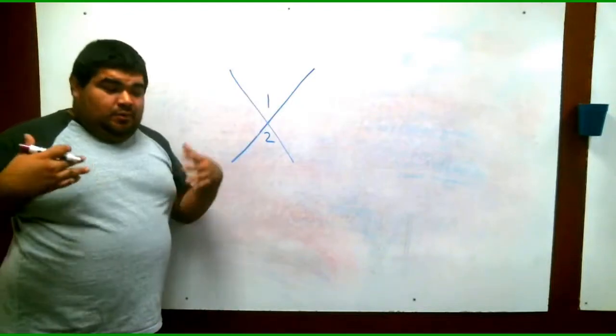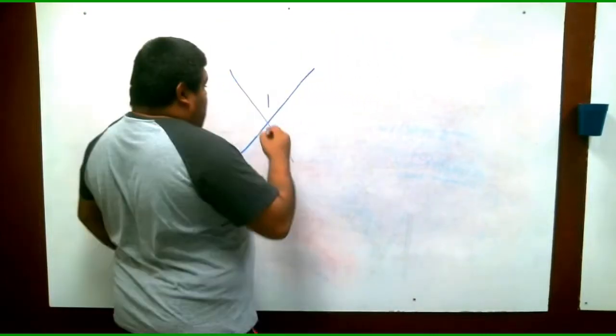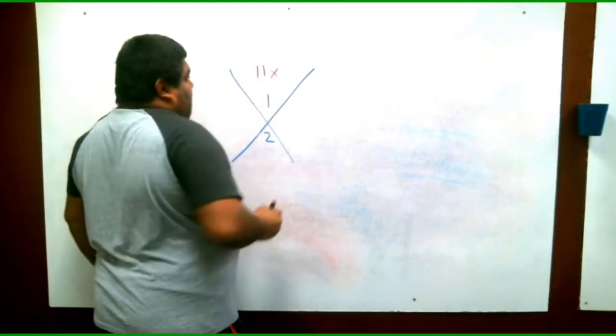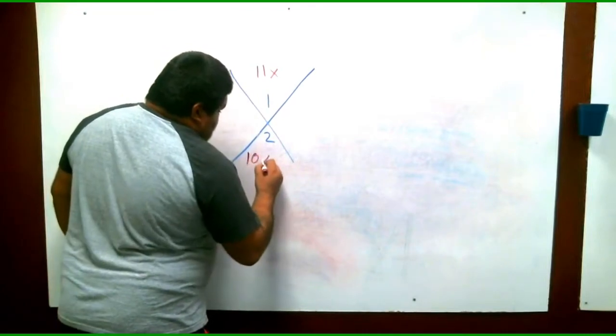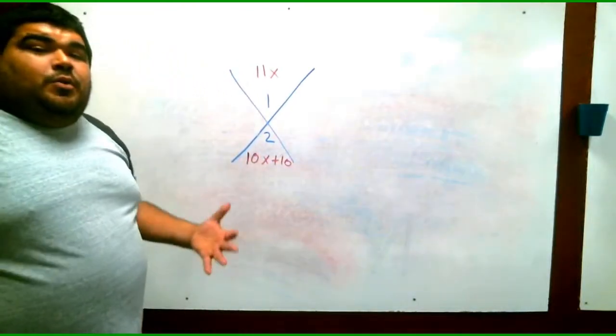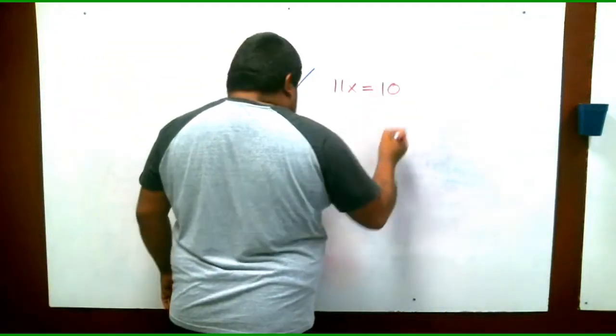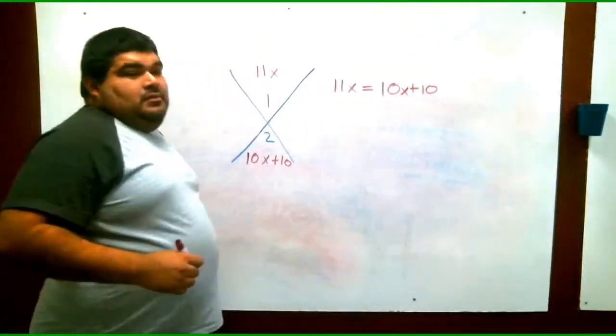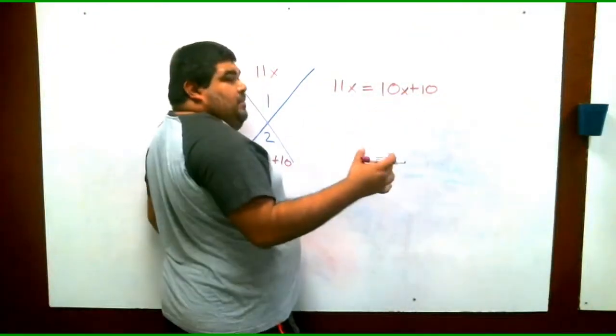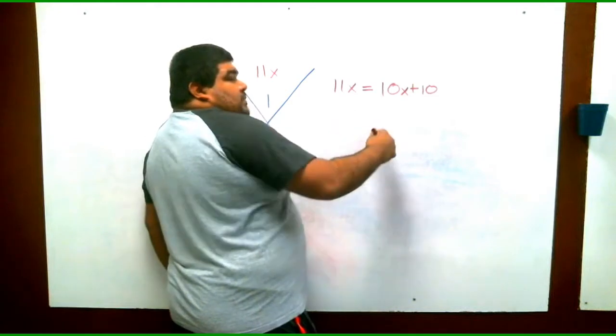All right, guys. So for the final one is a little different. For this one, remember, the rule is to equal each other. So what we're going to do is it tells us that angle 1 equals 11x. Angle 2 equals 10x plus 10. So the way we set it up is we have 11x equals 10x plus 10. Don't forget the x. Again, the way we're going to combine them, this one's easier because we already have a two-sided equation.